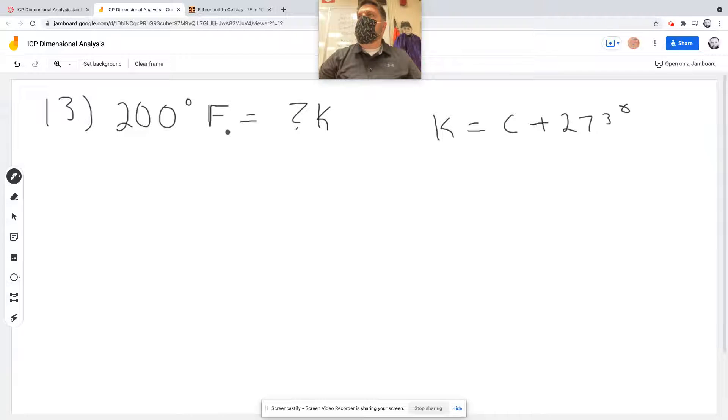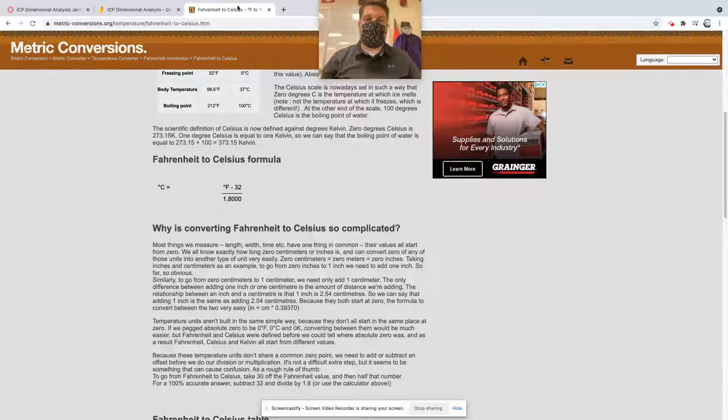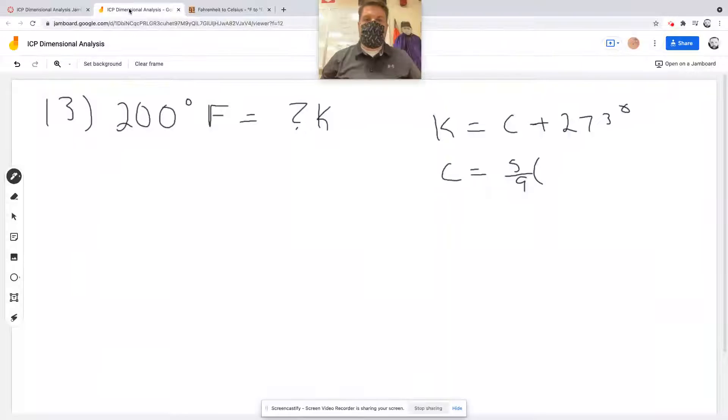But we have Fahrenheit. So I need to know how to convert Fahrenheit into Celsius, right? So if you don't know this off the top of your head, it's five-ninths times Fahrenheit minus 32.